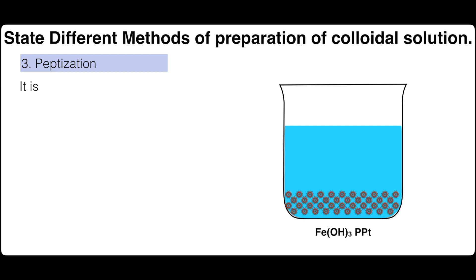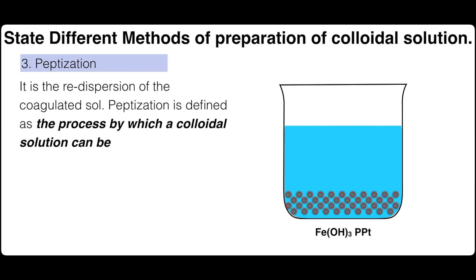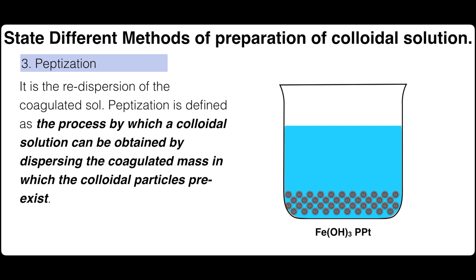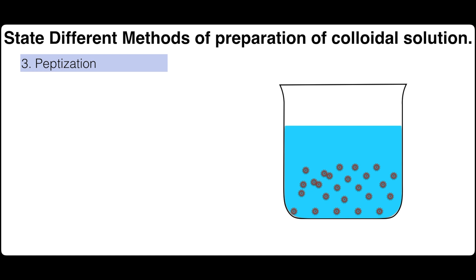Peptization is defined as the process by which a colloidal solution can be obtained by dispersing the coagulated mass in which the colloidal particle pre-exists. For example, ferric hydroxide is a coagulated solution and is a precipitate. On adding ferric chloride solution, peptizing agent to it, a reddish brown solution containing ferric hydroxide sol is obtained.